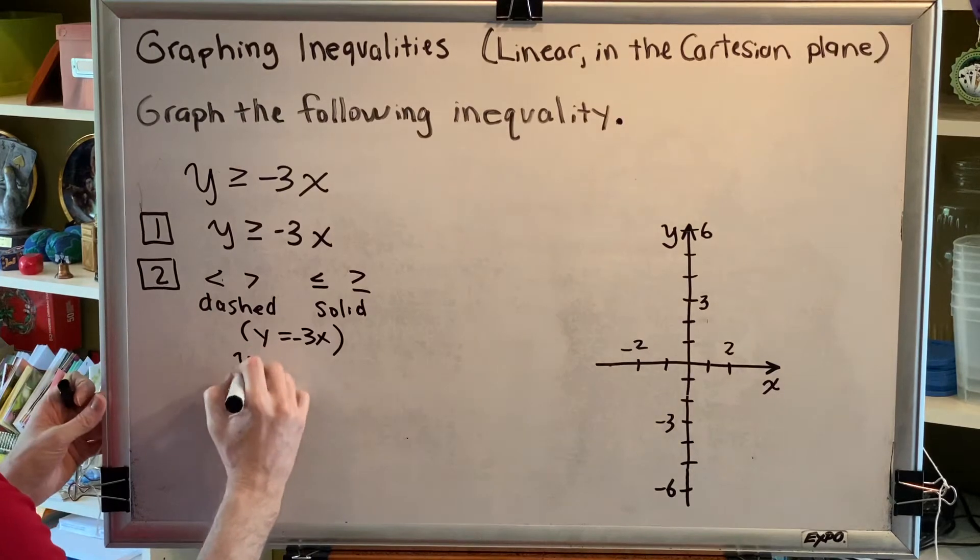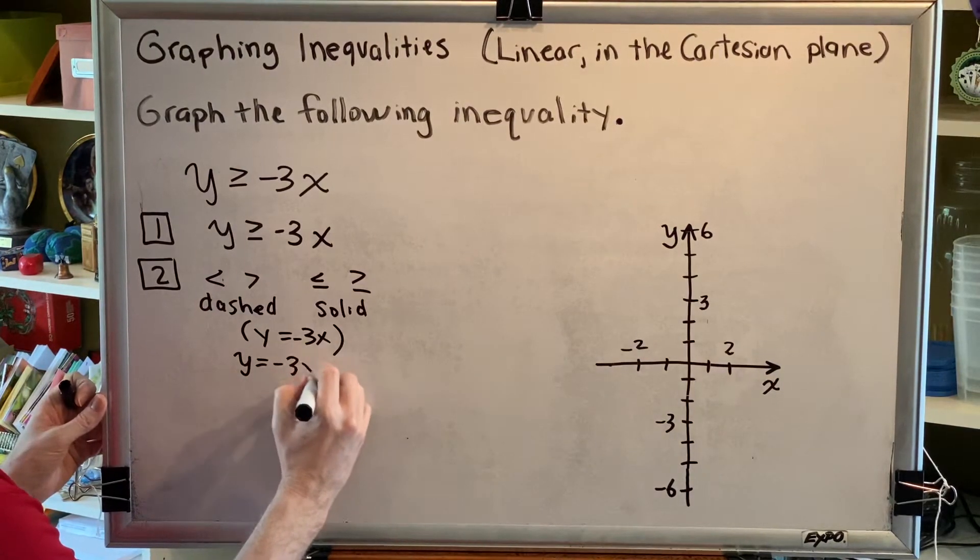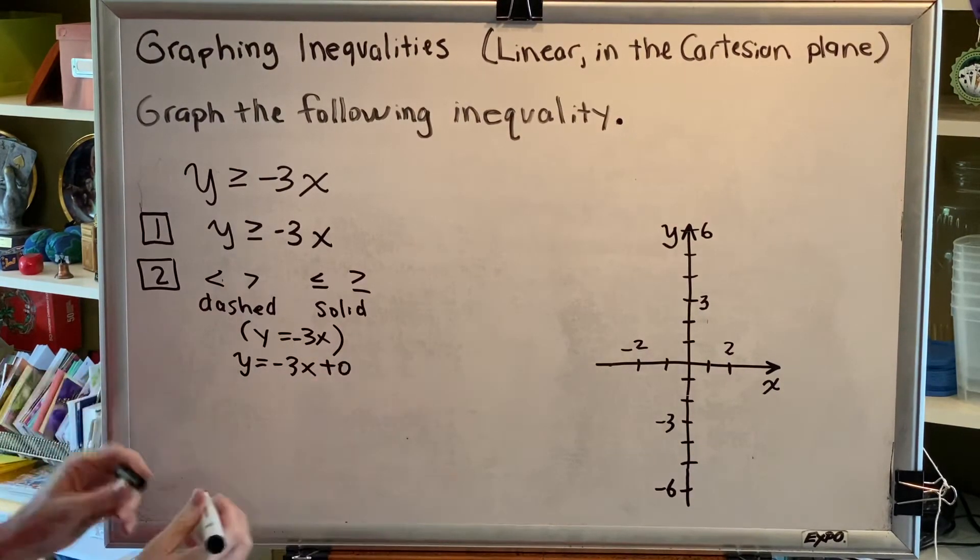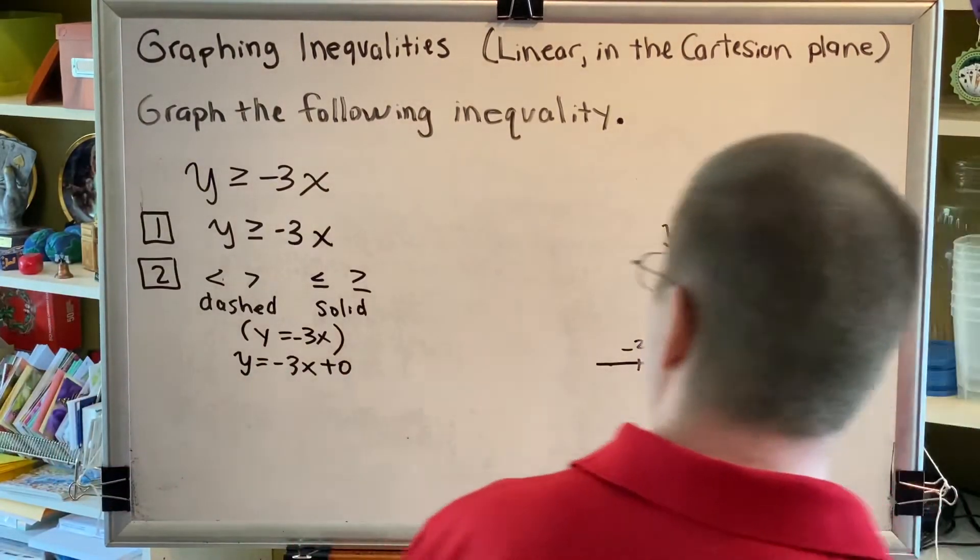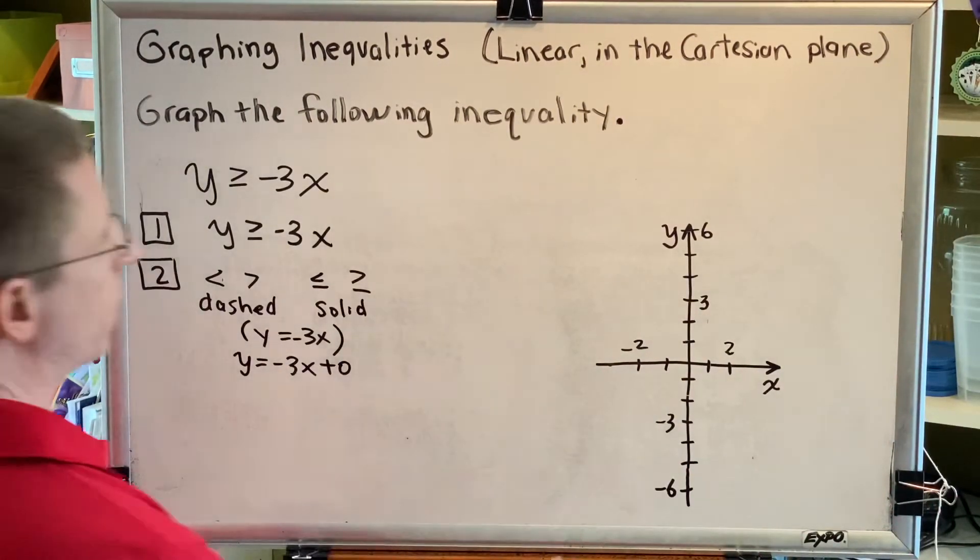Now, y equals negative 3x could also be written as y equals negative 3x plus 0. This helps us see that we have a line in the slope-intercept form with a y-intercept of 0.